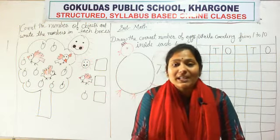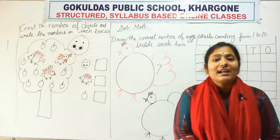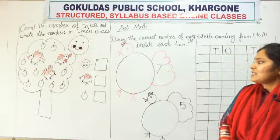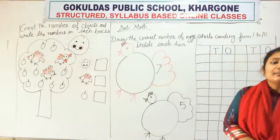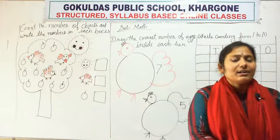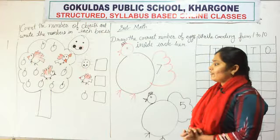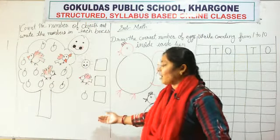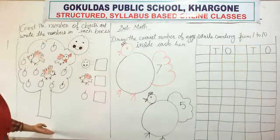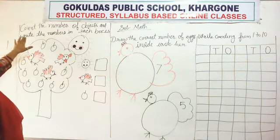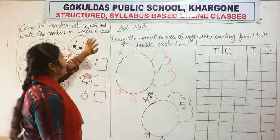Okay students, so which period today? Today is math period. And what we learn today? Today we will do some exercises, some worksheets. So okay students, tell me — you know 1 to 10 counting? You learned it? Very good. So we will do some exercise for counting. See here on the board. What is written here? Count the number of objects and write the numbers in each box.